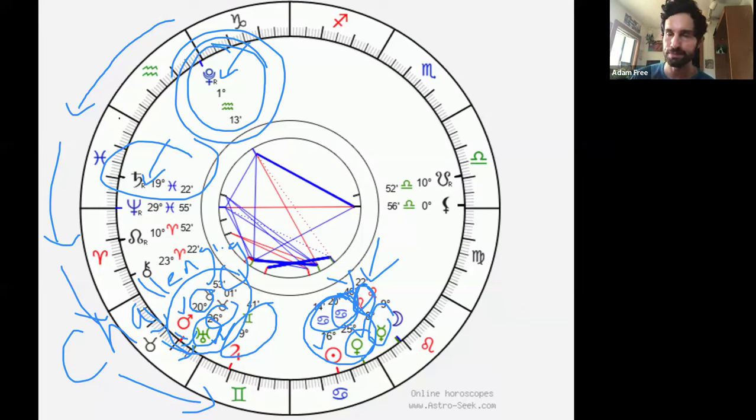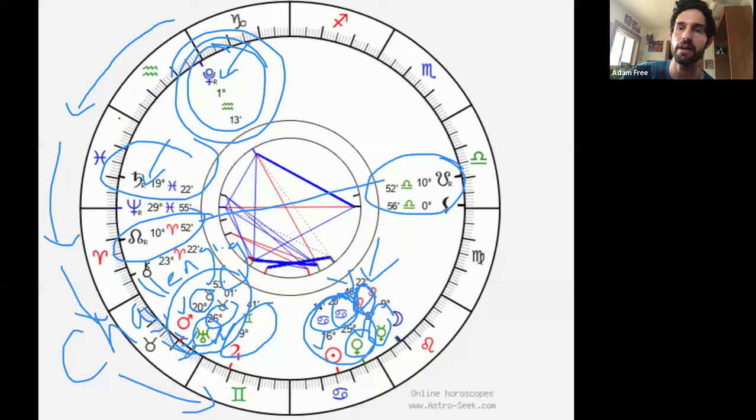The North Node and the South Node, they're always opposite. Those have been in Aries and Cancer for a while. Here's Aries, so the North Node is our evolutionary direction of progression. The North Node in Aries is really all about independent action, courage, strength, self-willed activity. That South Node in Libra is all about harmonizing relationships.